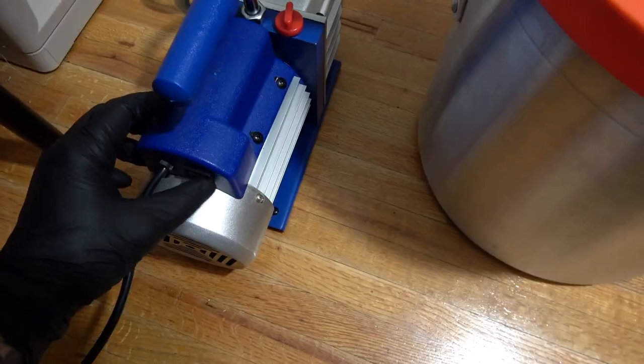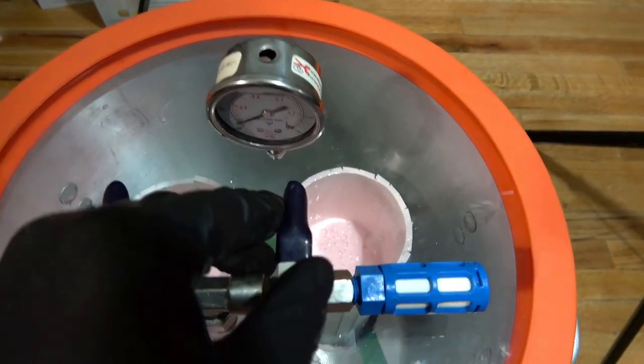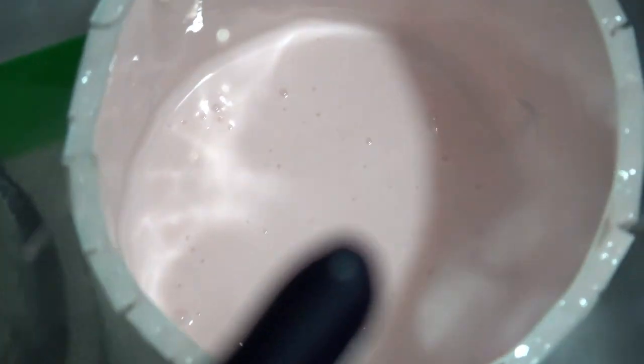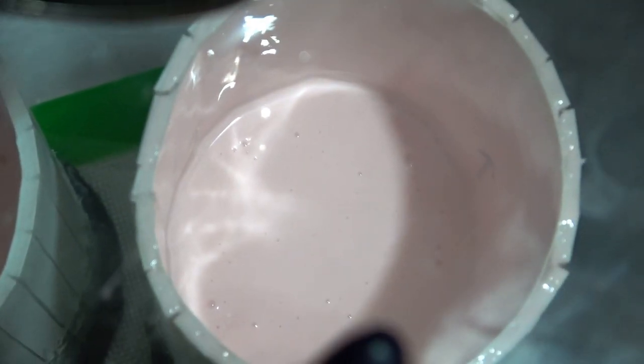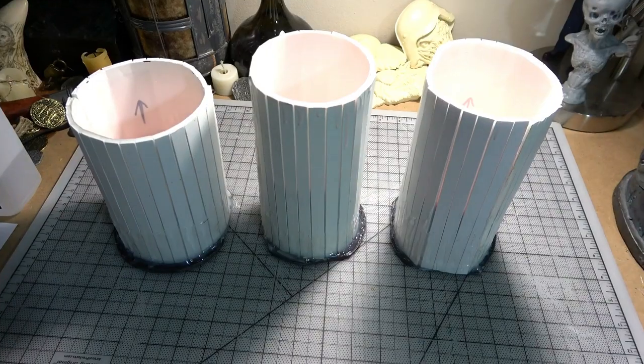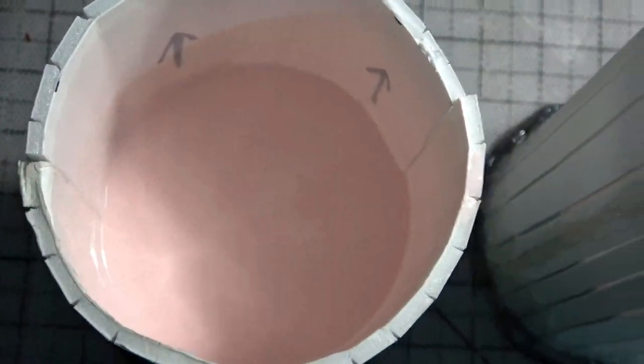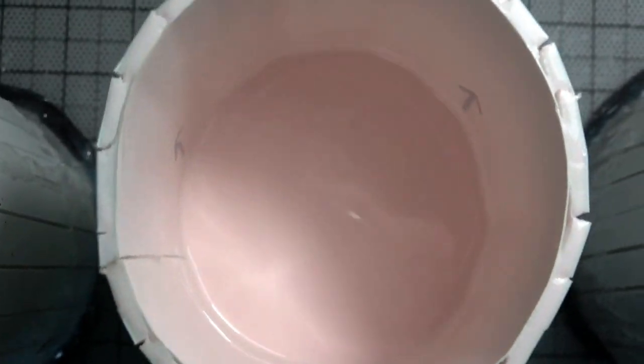Then after three minutes, I turn it off and begin to slowly release the pressure inside the vacuum chamber. As the pressure releases, you will notice the bubbles going away and the silicone will start to flatten out. And now you will have perfectly bubble-free, glassed out, flawless silicone molds.